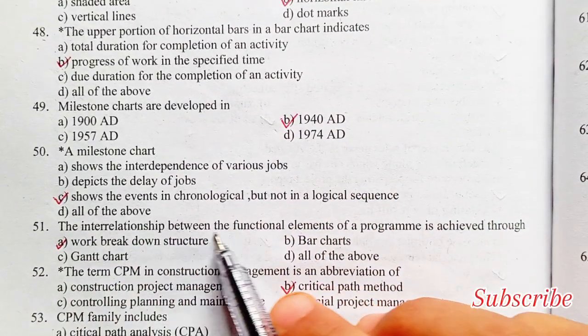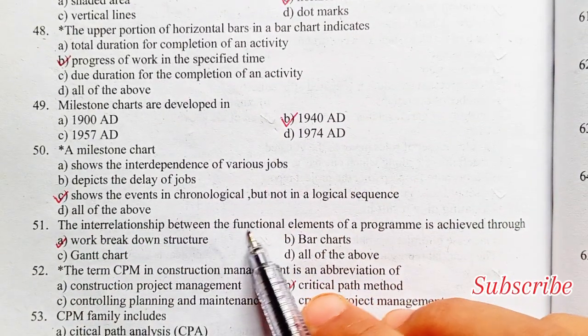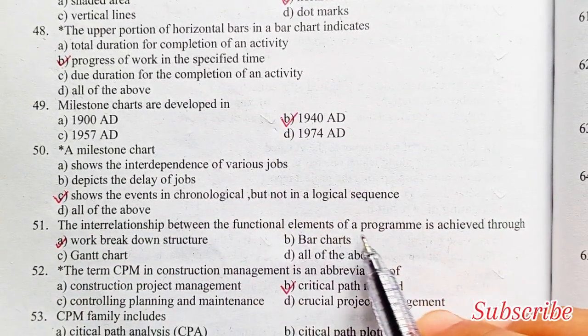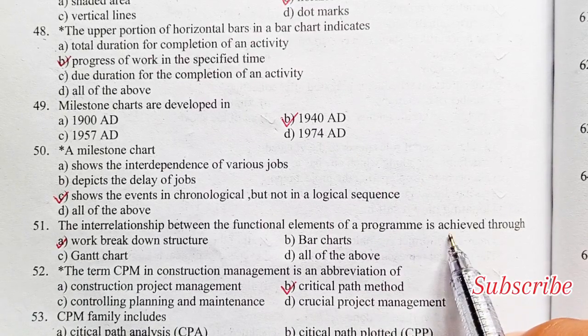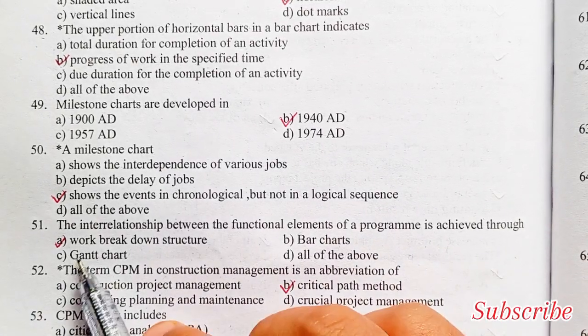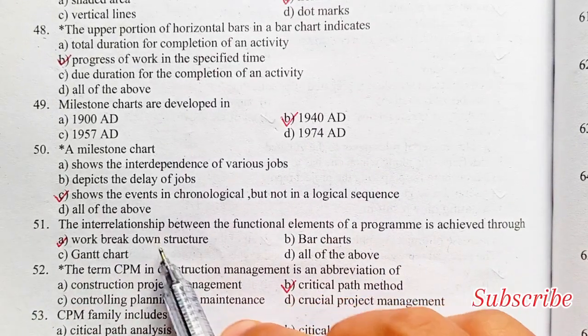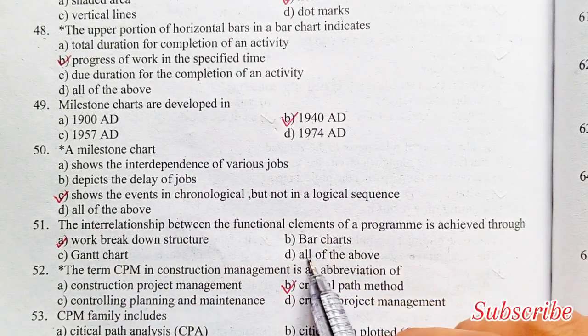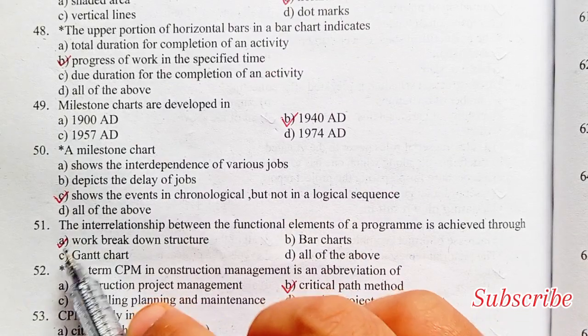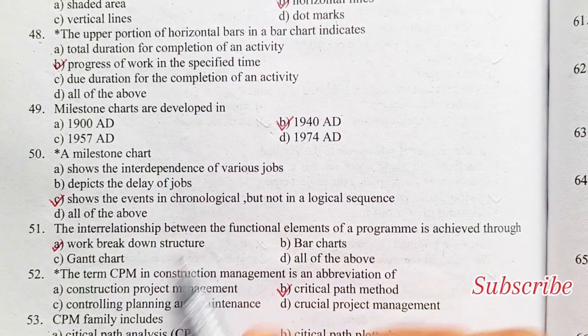The interrelationship between functional elements of a program is achieved through: work breakdown structure, bar charts, Gantt charts, or all of the above. Option A is the right answer — work breakdown structure.